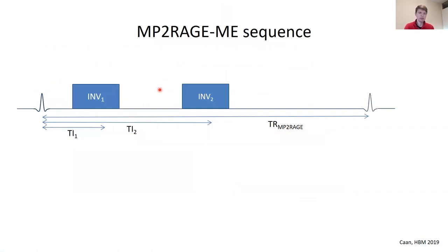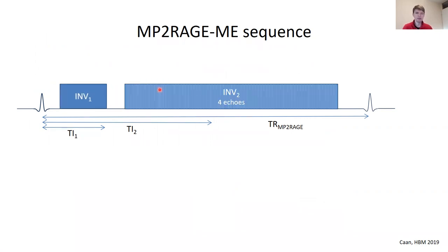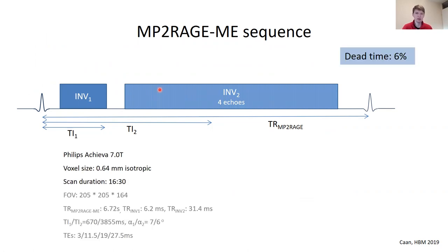Allow me to first go into the sequence, then into the motion robust imaging, before proceeding to accelerated imaging using deep learning. We started by building a multimodal sequence called MP2RAGE-ME — the multi-echo MP2RAGE sequence — by simply extending the second readout of the second inversion of the conventional MP2RAGE sequence to four echo readouts, reducing the dead time to six percent from initially more than 50 percent, giving us a flexible readout with a relatively long echo time for the second readout.